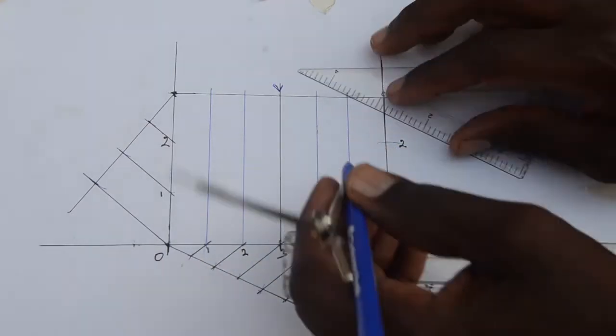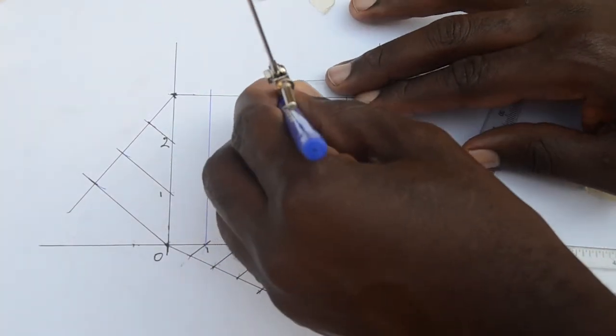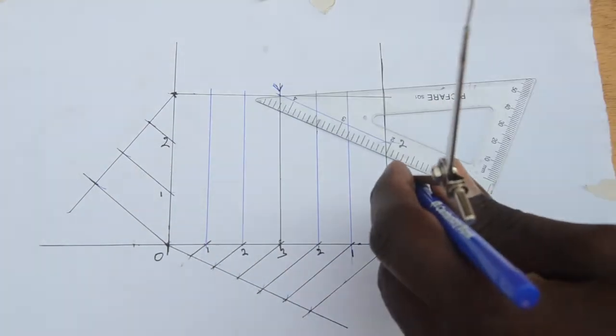And from the points on the side, draw lines towards the vertex.